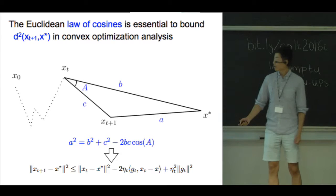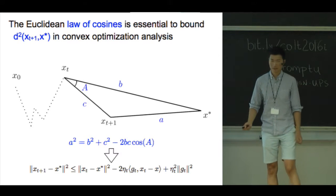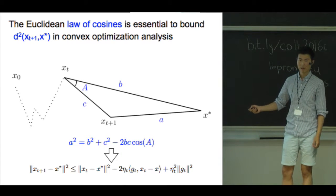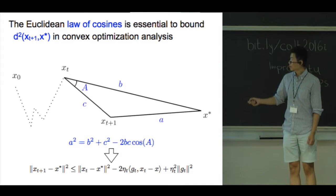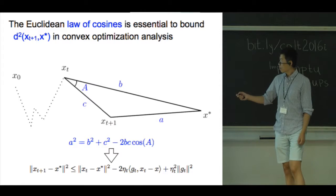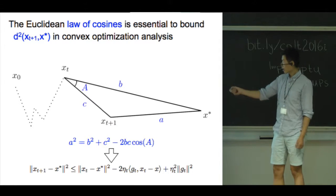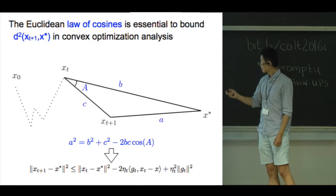To begin with, our key insight is that we need something similar to the Euclidean law of cosines to hold on Riemannian manifolds. The Euclidean law of cosines is able to bound the squared distance between the current iterate and the minimizer.